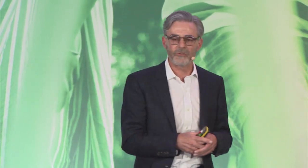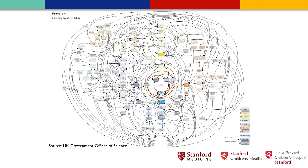This complex system is portrayed in a diagram from the UK government's Foresight group, which tried to map all the causes of obesity in society. Each node in that diagram has a similar figure behind it. It's considered a classic complex systems problem — one that will not be addressed by any single solution, but one requiring many solutions targeting different parts of the system to hopefully move the whole system in a better direction.